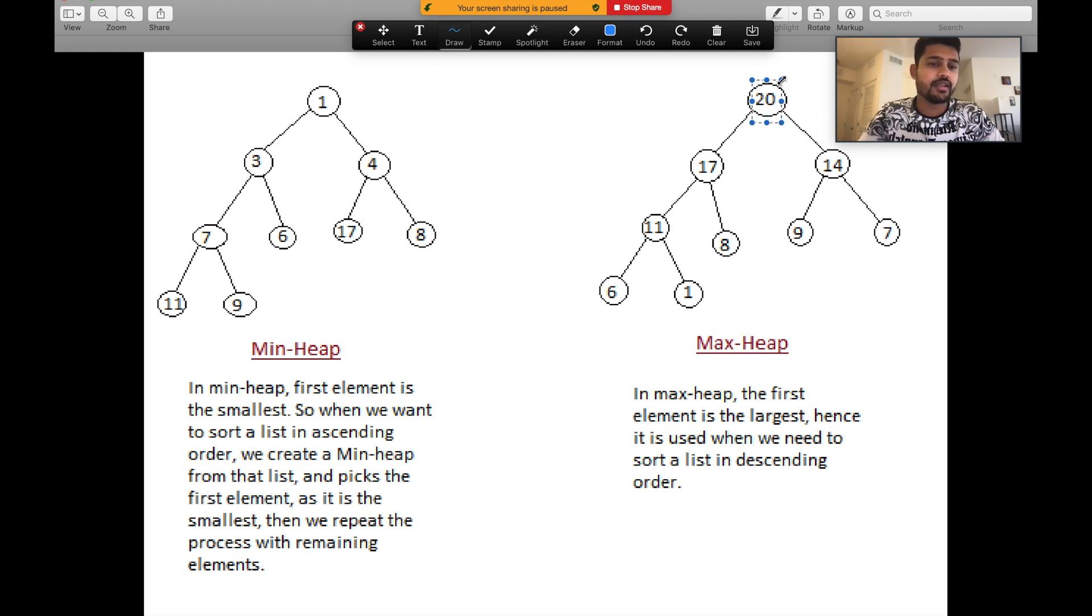Let's say you pop this out. Then the tree restructures itself, the priority queue restructures itself, and you'll find 17 at the top. So basically, if you always want to grab the top elements, then you need to go for the max heap. If you want to grab the min elements, then you want to go for the min heap.